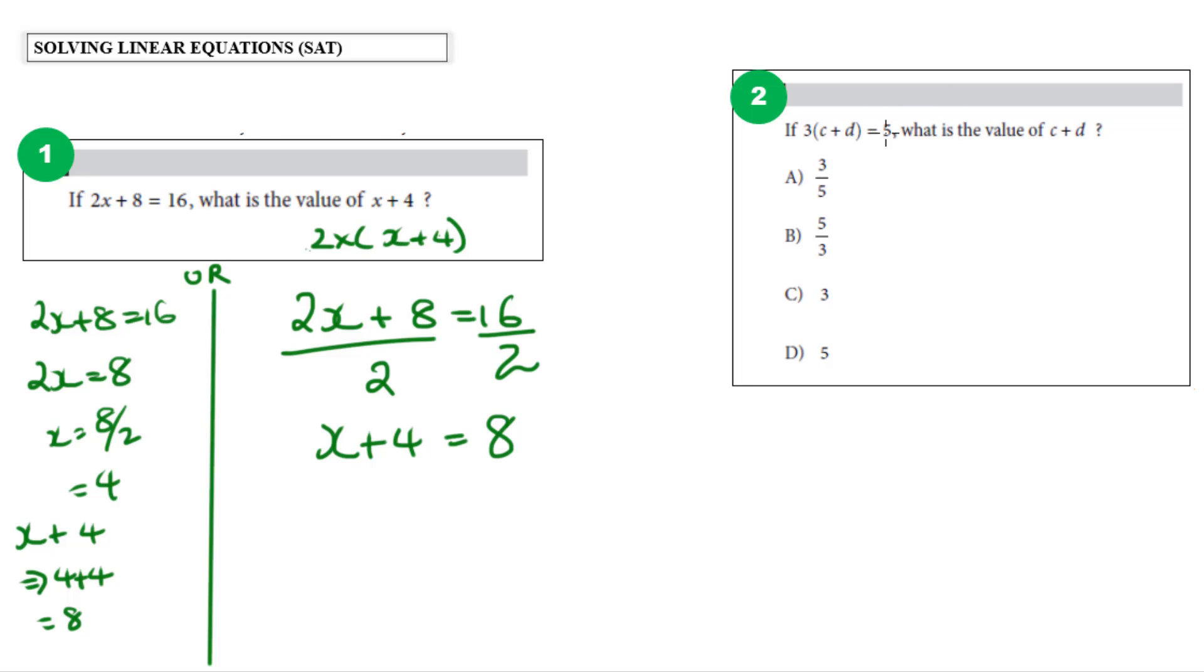If 3 times c plus d equals 5, what is the value of c plus d? How do you think we could approach this question with structure? Well, think about it, we only want c plus d, so really it doesn't matter if we solve for c or it doesn't matter if we solve for d. All we need to figure out is what c plus d is or what it's equal to.